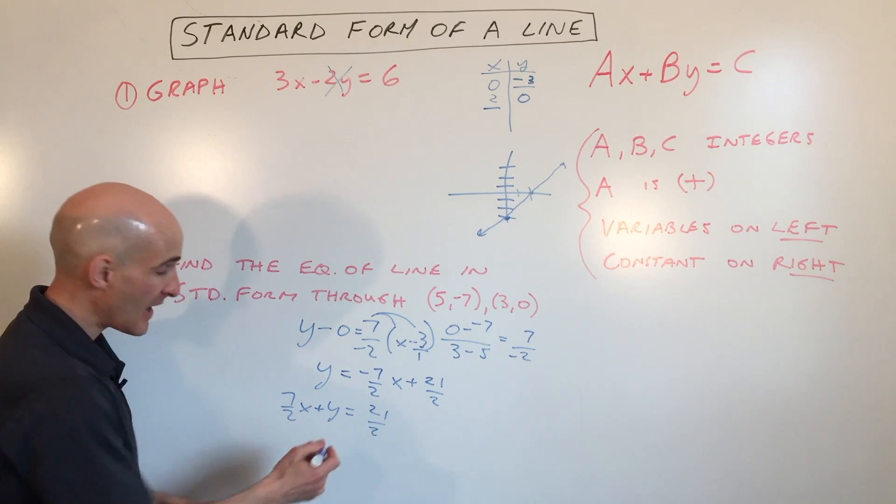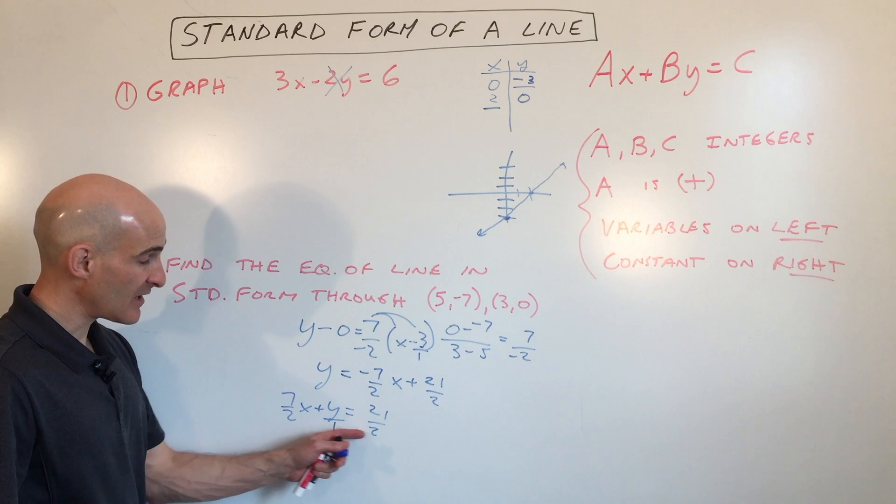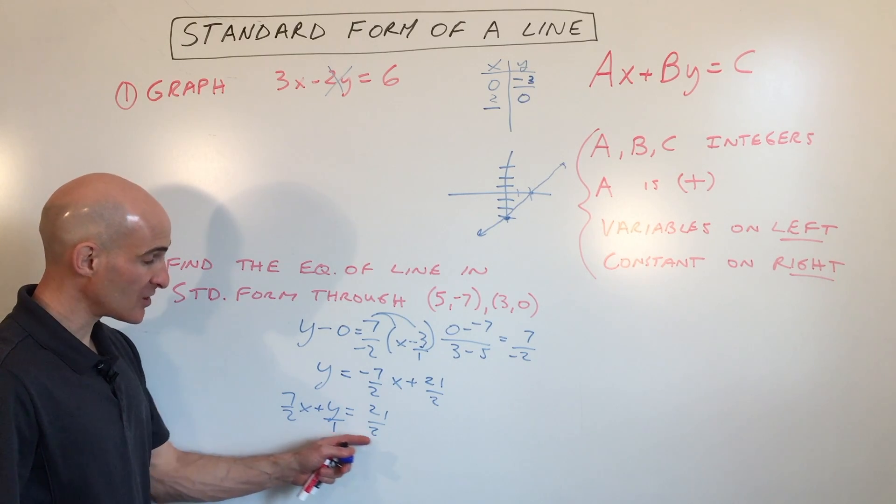But I want these all to be integers. So I'm going to multiply by the common denominator—or the lowest common multiple, however you want to say it. And it looks like that common denominator here is going to be 2.